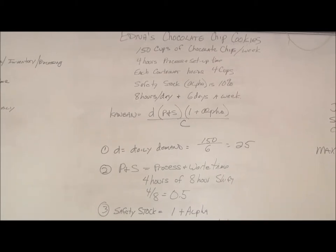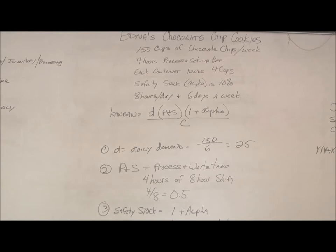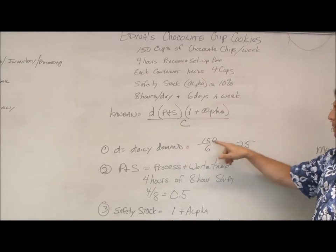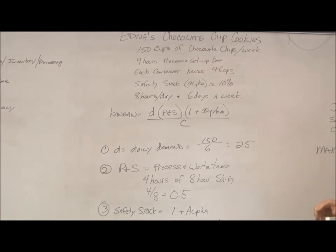So first we calculate our daily demand. We work six days a week, so our daily demand is 25 cups of chocolate chips.